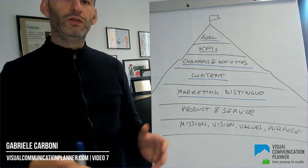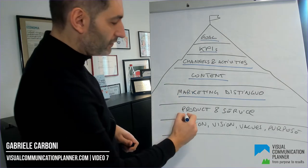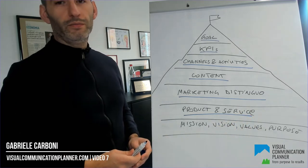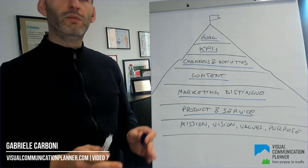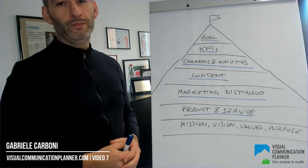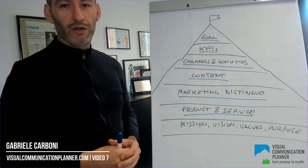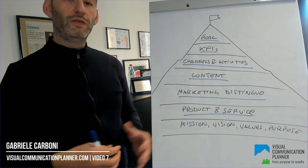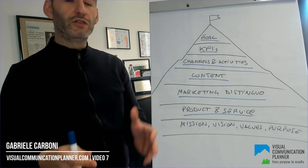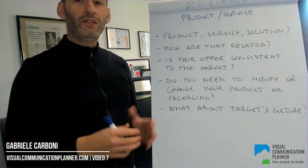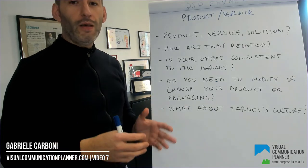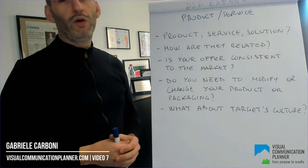Now you want to determine which product or service you are going to share with the world. It's important to remember that your product is the result of a good value proposition. Remember the problem you are solving. Let's see the questions that the Visual Communication Planner provides for the products and services element of the strategy. Since most companies focus all their communication on product or service, this should be the easiest question to answer.